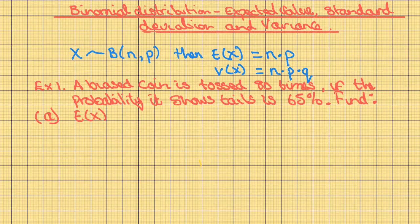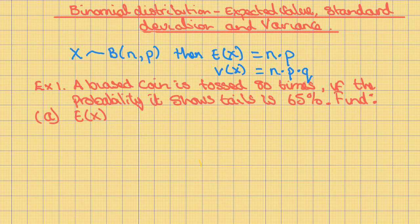Example 1. A biased coin is tossed 80 times. If the probability it shows tails is 65%, find A, the expected value of X. Well, the expected value of X is equal to NP.